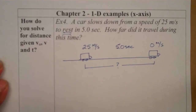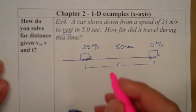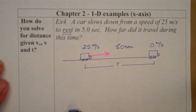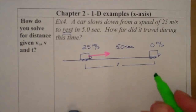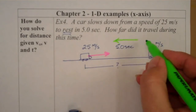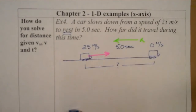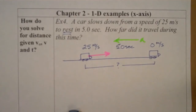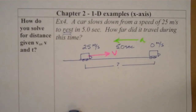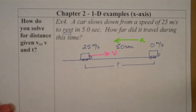Since our motion was towards the right, that's our direction of motion. Since we're slowing down, that lets us know that we should see an acceleration in the negative direction — our acceleration is acting against our direction of motion. So when we get our final answer, we should see that acceleration is negative.